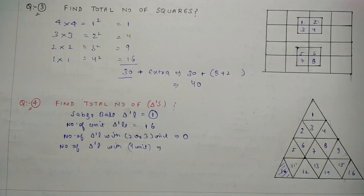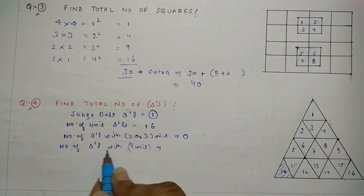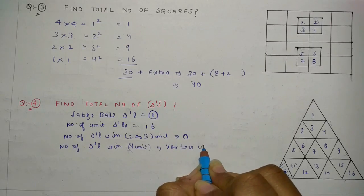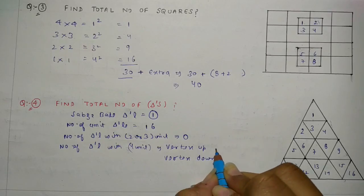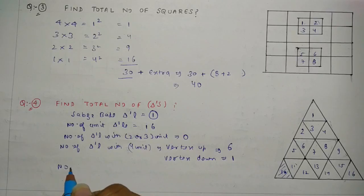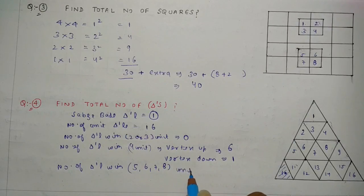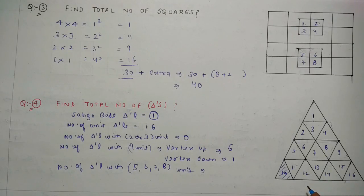Number of triangles with 4 units: vertex up gives 6. Now vertex down — that is a triangle with 4 units with vertex pointing downward — we can also find those. Then number of triangles with 5, 6, 7, and 8 units — you can see that 5 units, 6 units, 7 units, or 8 units of triangles cannot be formed, so that is 0.